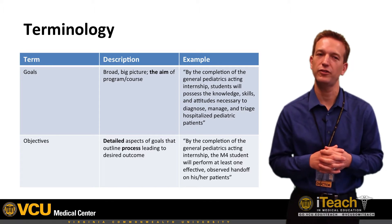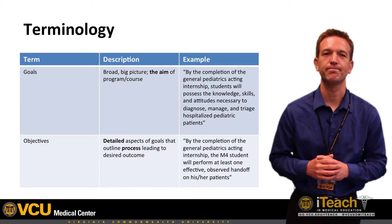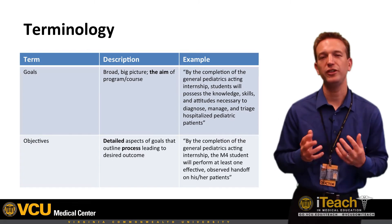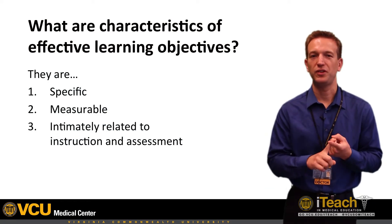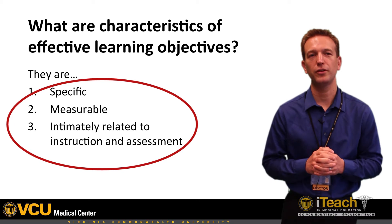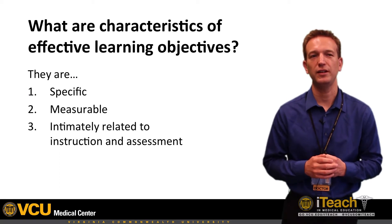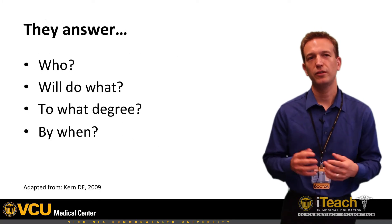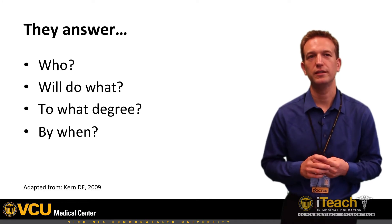In order to achieve that goal, I need to create several very concrete, specific, and measurable objectives such as the following: by completion of the General Pediatrics Acting Internship, the M4 student will perform at least one effective observed handoff on his or her patients. An effective learning objective should be specific and measurable, and as we mentioned in discussing integrated course design, intimately related to both our instructional methods and methods of assessment. These characteristics allow learning objectives to clearly communicate our expectations to learners, other faculty, or our accrediting bodies. An effective learning objective must ultimately answer: who will do what, to what degree, and by when?